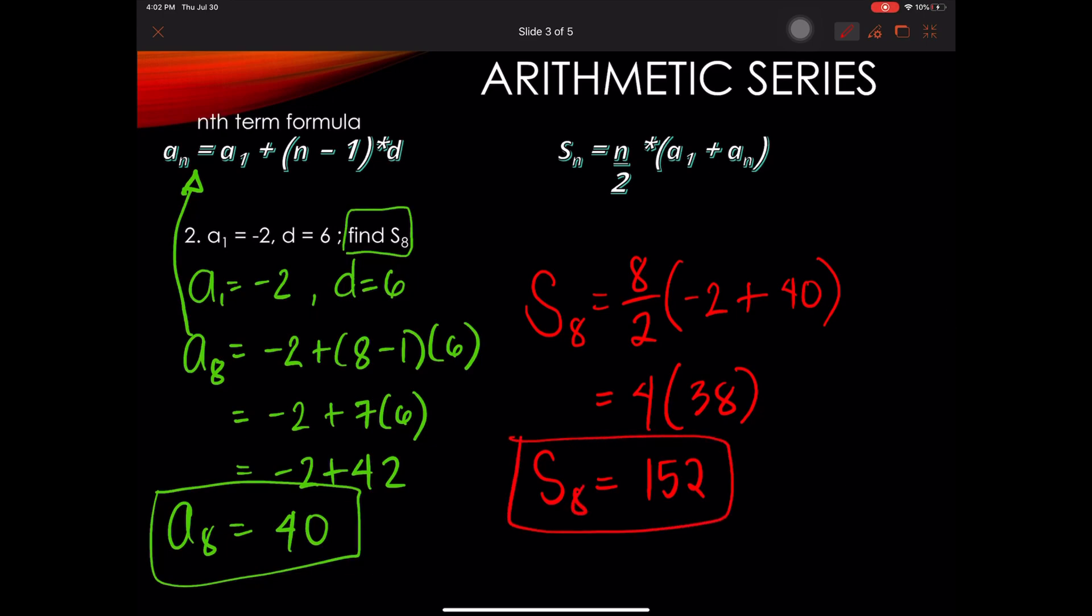So same thing we did on our first example, you can add from negative 2 and collect all the 8 terms, up to 40, and add them. The sum should be 152. And now, let's go back.